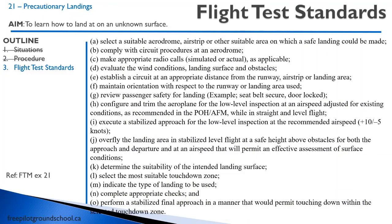For your flight test, if you're given a precautionary approach, select a suitable aerodrome, airstrip, or area. A lot of times examiners will have you fly in the vicinity of another aerodrome like a grass strip to see if you're going to land on a road or a farmer's field, or just land at the aerodrome you're over. Make proper circuit procedures, proper radio calls, do a proper inspection and safety briefing. For your low-level inspection, just make sure it's stabilized and you're not descending or slowing down. That concludes this lesson on precautionary landings — thanks for joining me and we'll see you in the next lesson.